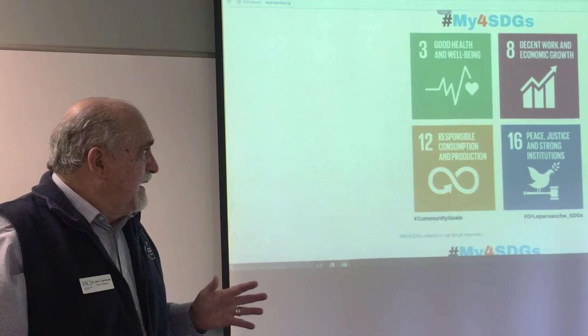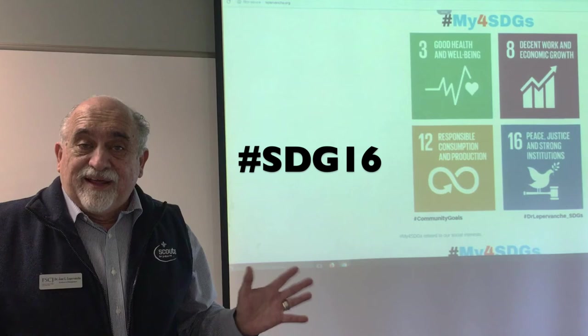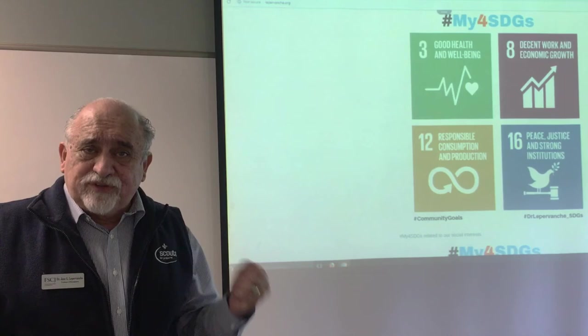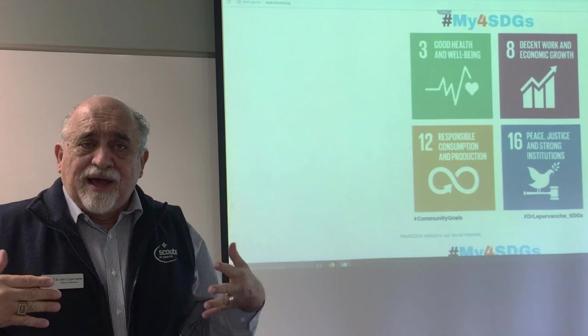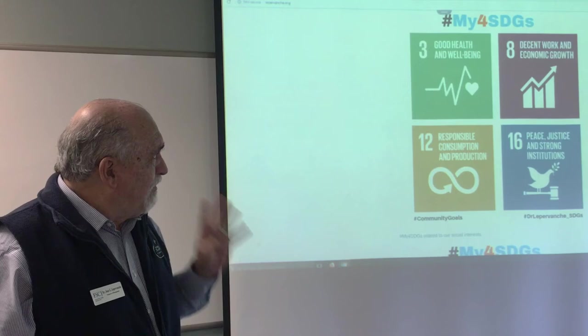Finally, we all want peace, justice, and freedom in our countries and our society. We want to be sure that we have strong institutions that protect liberties, human rights, and immigration — strong governments that allow people to live, to produce, and to be an active part of their communities. These are my four SDGs related to my community involvement.